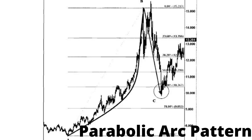Target: Measure the distance of the rise from the base to the top. Most parabolic arcs result in a 62% retracement. Stop: Protect the trade by placing a few ticks above the high point of the parabolic arc.